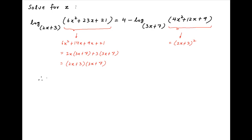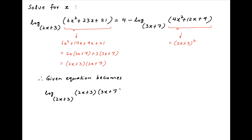Substituting these values, the given equation becomes log of (2x plus 3)(3x plus 7) to the base (2x plus 3) is equal to 4 minus log of (2x plus 3) whole square to the base (3x plus 7). Using properties of logarithms, this last term can be written as 2 times log of (2x plus 3) to the base (3x plus 7).